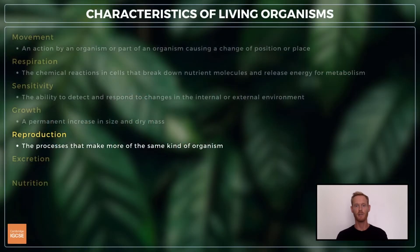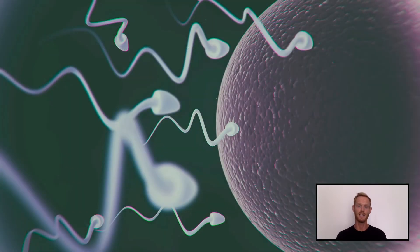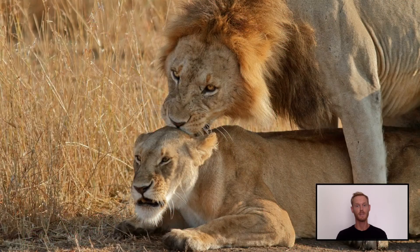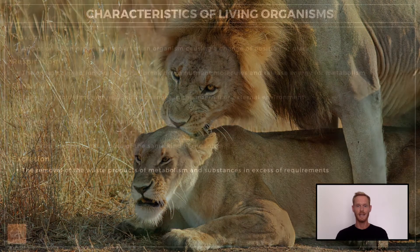The next characteristic is reproduction, which can be defined as the processes that make more of the same kind of organism. Without the ability to reproduce and pass on genetic material, all living species would cease to exist within a single generation.